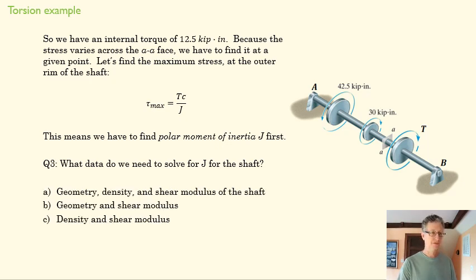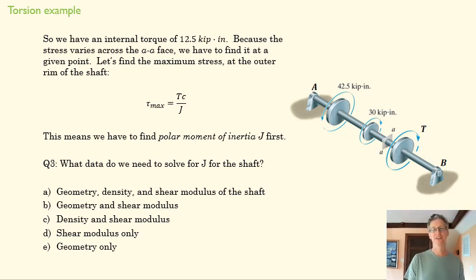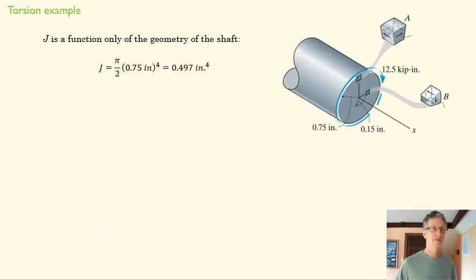And so J is the second moment of area. And so it's just a function of geometry. And we can solve that relatively easily with J is pretty easy with circles. It's just that radius. Remember to use the radius and not the diameter to the fourth power. And we get our J value here. Notice the units of that second moment of area. They're sort of odd units.